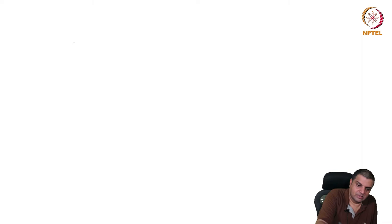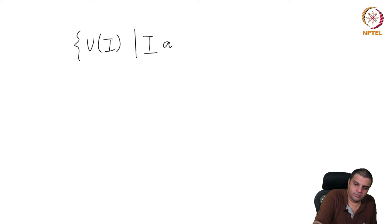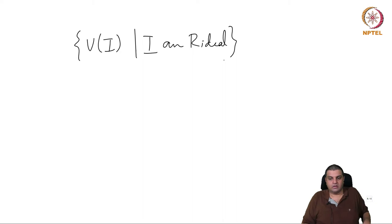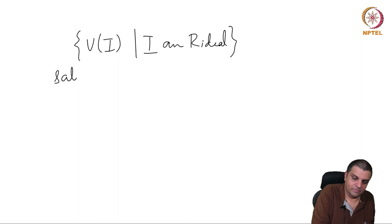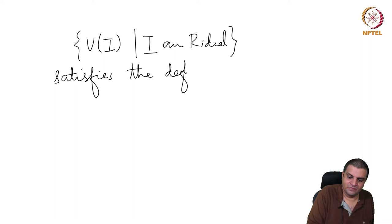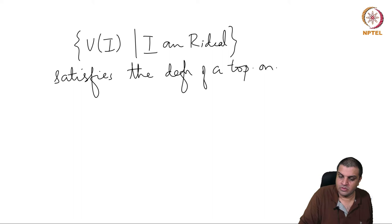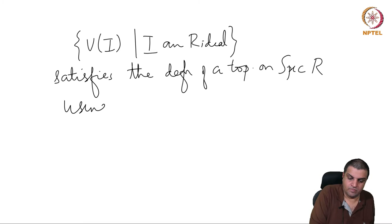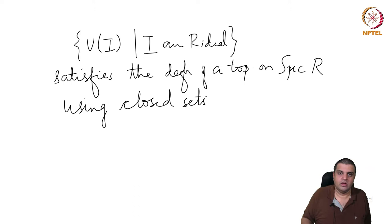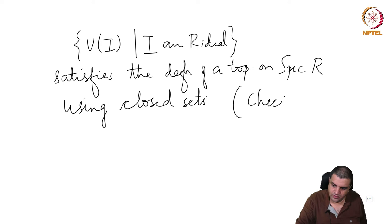We need to check that this is fine. It will be an exercise that if you look at the collection of V of I, it can satisfy the definition of a topology using closed sets. This is an exercise. I will explain what would have to be checked.